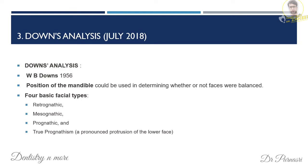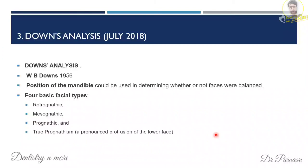Downs analysis can be asked as a short note. It was given by W.B. Downs in 1956. Downs considered the position of the mandible to determine whether faces are balanced. Based on this, he described four facial types: retrognathic, mesognathic (average), prognathic (prominent lower face), and true prognathism (pronounced protrusion of the lower face). You can also add the dental, skeletal, linear, and angular parameters used in Downs analysis.